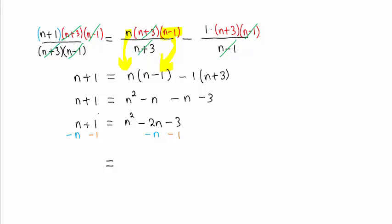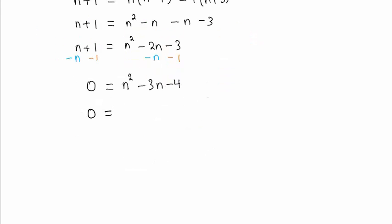On the left-hand side, n minus n is 0, 1 minus 1 is 0. We have 0. On the right-hand side, we have n squared minus 3n minus 4. This factors as n minus 4 times n plus 1.